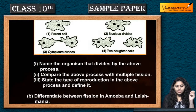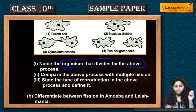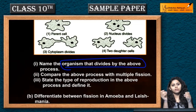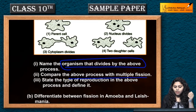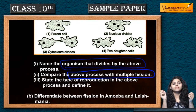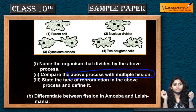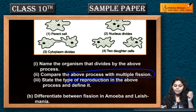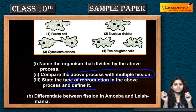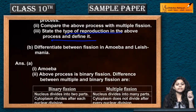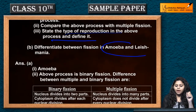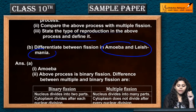Name the organism that divides by the above process. Compare the above process with multiple fission. State the type of reproduction in the above process and define it. The next part is to differentiate between amoeba and leishmania.